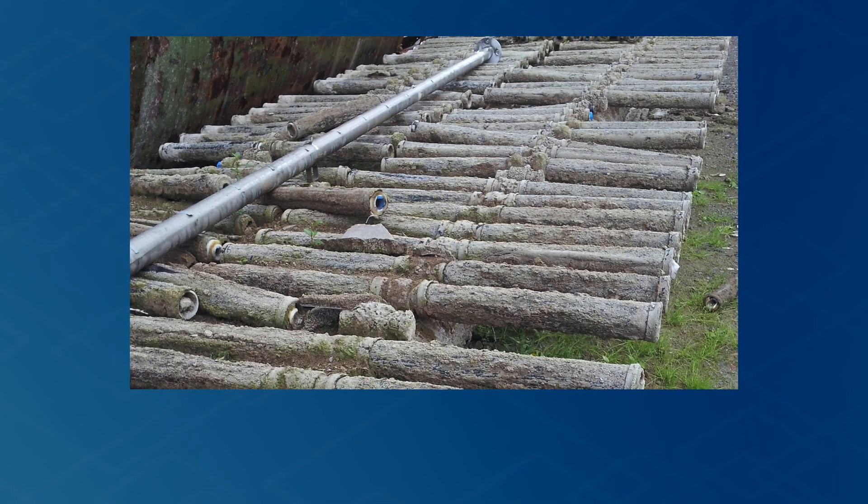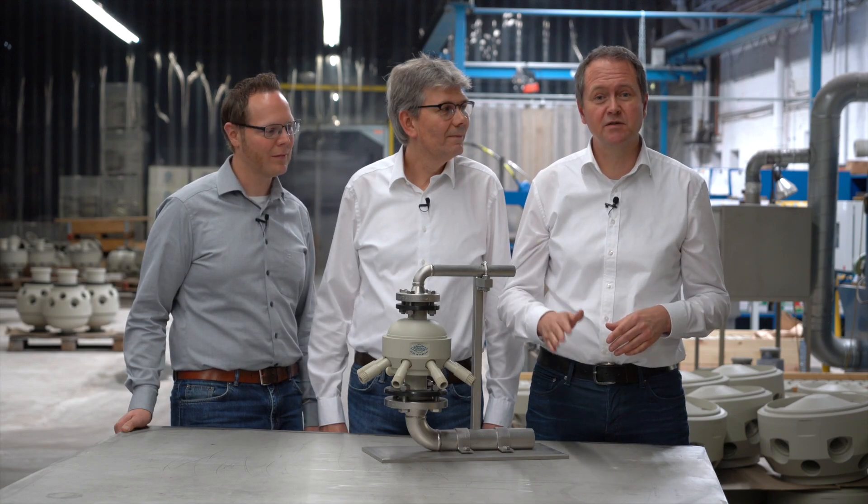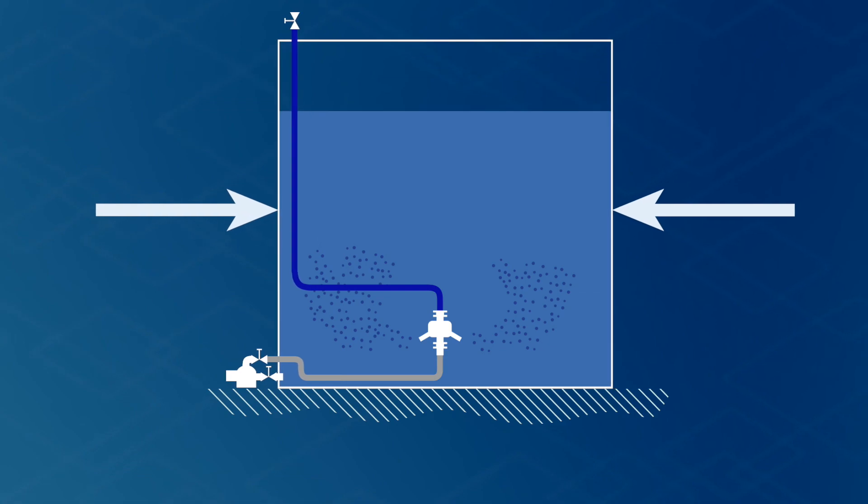In contrast to membrane aerators, ejectors don't cause any scaling or fouling. Safety margins are not required when designing roots blowers. The alpha factor for ejectors is a lot higher than in other oxygen transfer systems. In contrast to conventional aeration systems, ejectors can also be used in very deep water, which cuts the footprint of the tank dramatically.